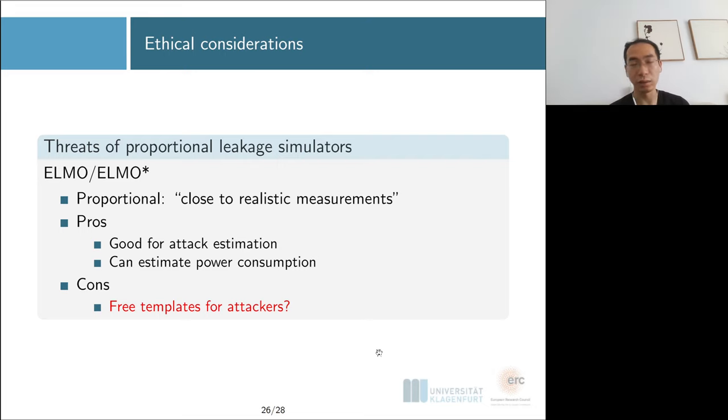The only restriction of profiling attacks is you have to have this identical device where you control everything, including the masks and secrets, so you can build your templates without any limitation. Accessing that device is the restriction of a profiling attacker. But with ELMO, you sort of get this for free. The attacker can just take ELMO and use the templates built from ELMO as free templates. They can do profiling attacks without actually having access to a profiling device.